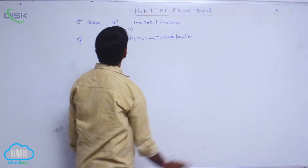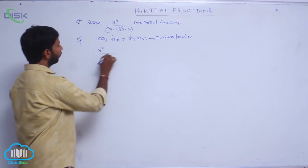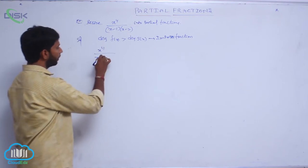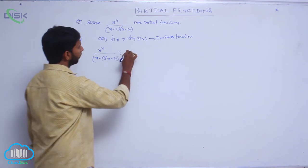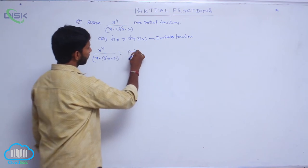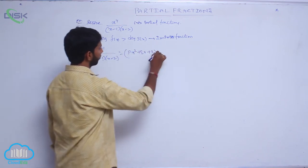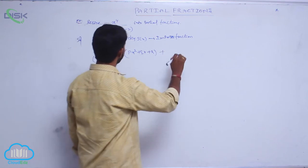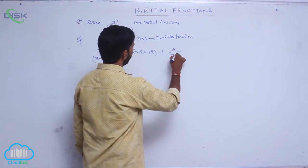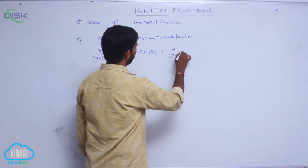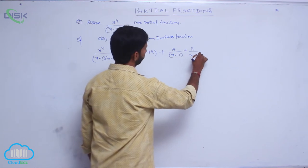The improper fraction x to the power 4 by (x minus 1)(x minus 2) can be written as px squared plus qx plus r, plus A by (x minus 1), plus B by (x minus 2).